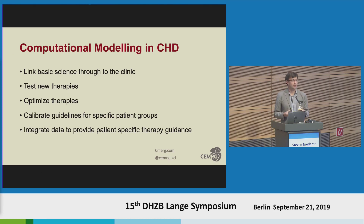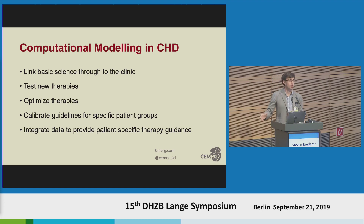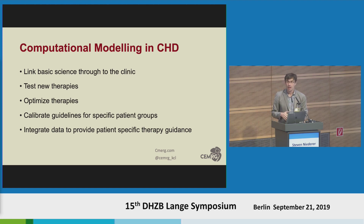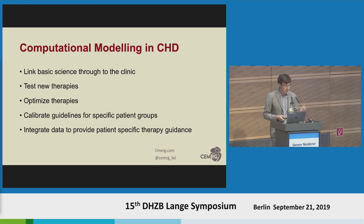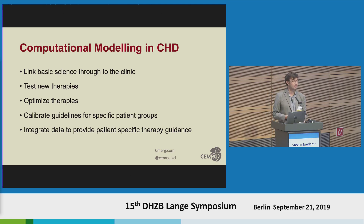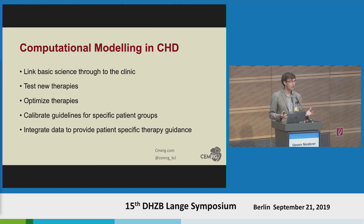What we hope we've shown is that these computational models provide a way to link basic physiology from mouse models, animal models, or proteomics through to organ-scale observations. It's a way to test new therapies and apply new hypotheses about how to treat patients, and to optimize therapies. We may be able to use models to calibrate inclusion criteria or indications to different patient groups, and this provides a framework for integrating data from different imaging modalities and putting that all together to guide therapy.